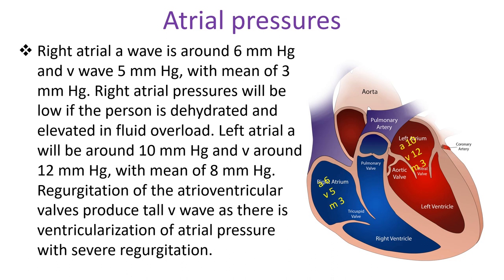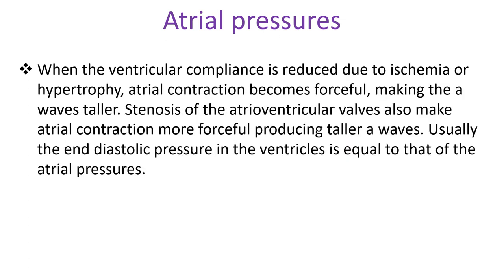Regurgitation of the atrioventricular valves produces tall V waves, as there is ventricular pressurization of atrial pressure with severe regurgitation. When ventricular compliance is reduced due to ischemia or hypertrophy, atrial contraction becomes forceful, making the A waves taller.